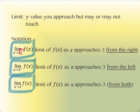If there's a little plus sign, it means you approach the value from the right. The right-hand side of the graph is the positive side. If there's a negative, it means you're approaching from the left-hand side of the graph. And if there isn't anything after that, it means you have to approach the value from both directions.